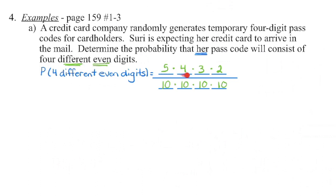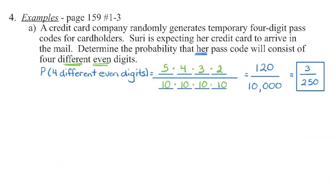I can multiply across the numerator, or equivalently use 5P4, since this is like a permutation. The denominator is 10 to the power of 4, which is 10,000. That fraction can be reduced, and converted to a decimal or percentage if desired.